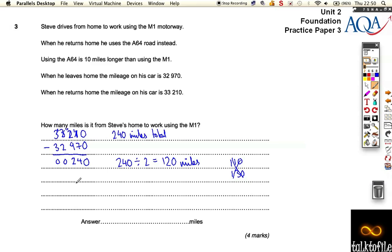So actually, using the M1 it's got to be 115, and using A64 it's got to be 125. Now adding those two up does give us the 240, but they're also 10 miles apart, which is exactly what we want. So the M1 is 115 miles.